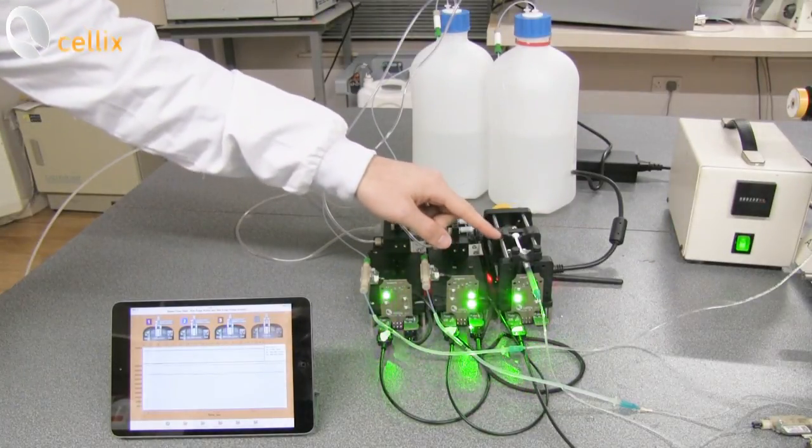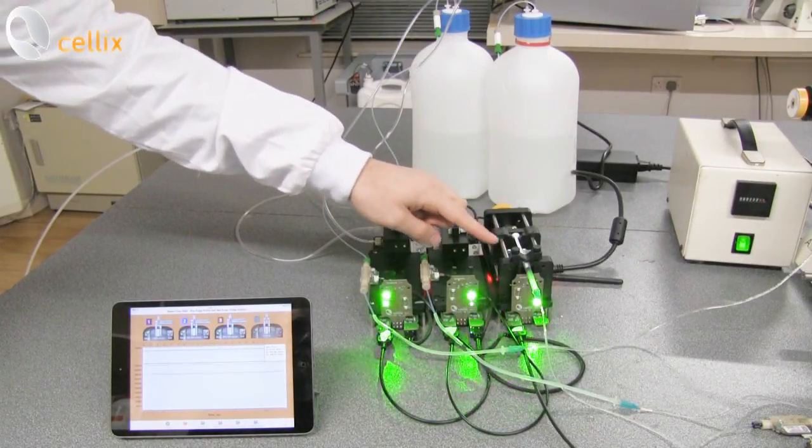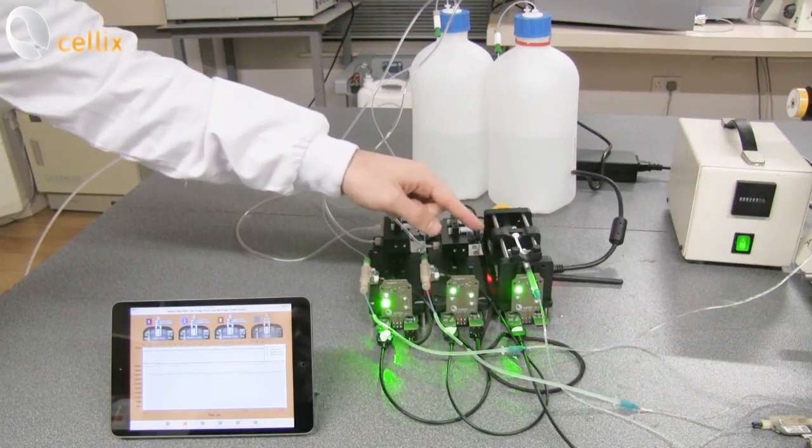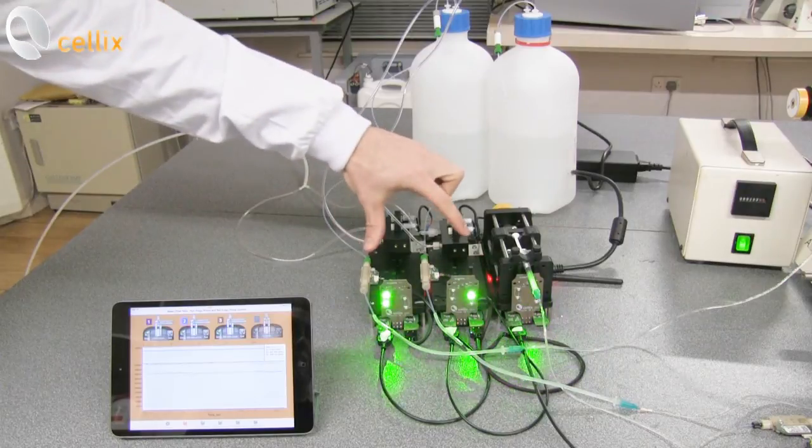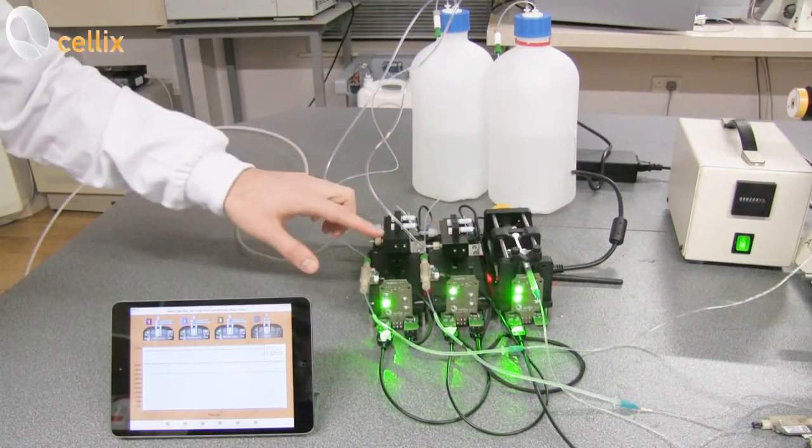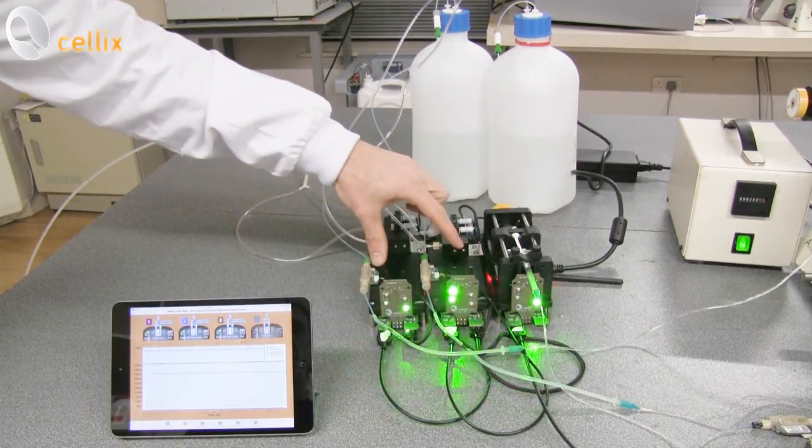The Exigo pump, which is the syringe-driven pump, is providing the sample, which in this case is comprised of fluorescent microspheres. The other two pumps, the Unico pumps, which are the pressure-driven pumps, are providing the sheet fluid.